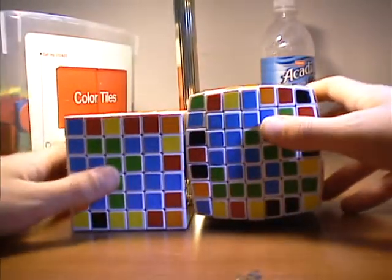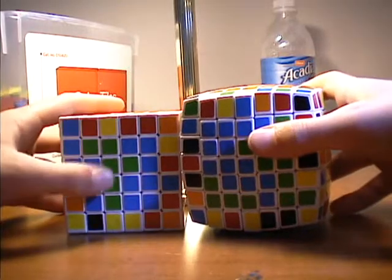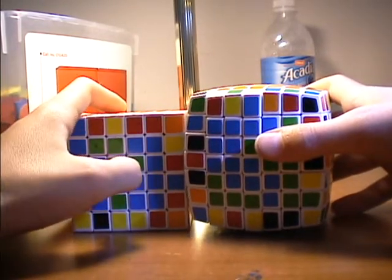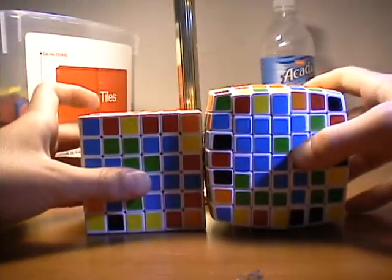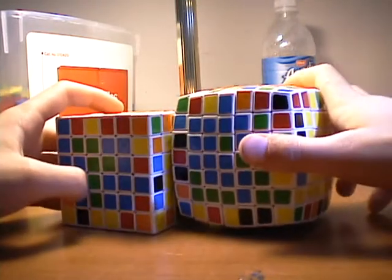So, that's pretty much all you need to know for step 5, just keep doing that until both of the centers are solved. And also, I might be making a video for tips on how to get faster with V-cubes, because this is just a basic method, just to solve it for beginners, and that's all you really need to know for step 5.